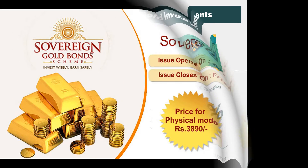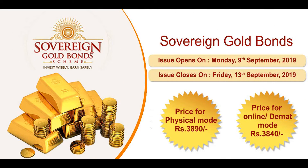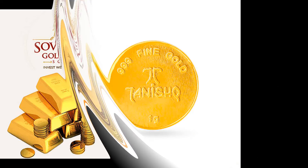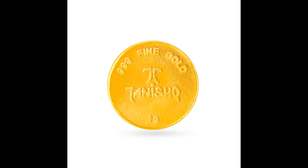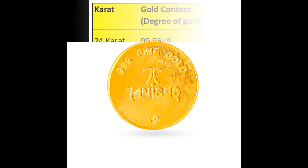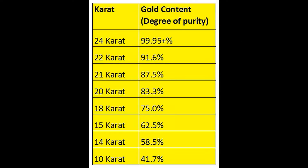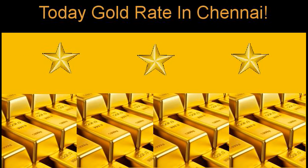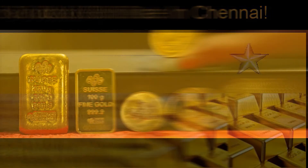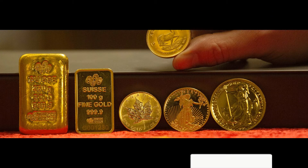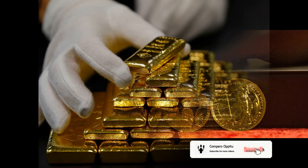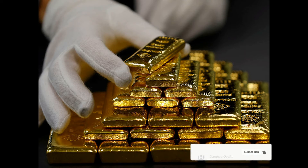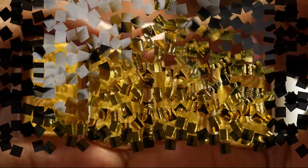Now let's look at sovereign gold bonds. This is a great investment — the minimum is 1 gram of 24 karat gold, priced at around 4,700 rupees per gram. You can invest in 1 gram, 5 grams, 10 grams, or up to 100 grams.